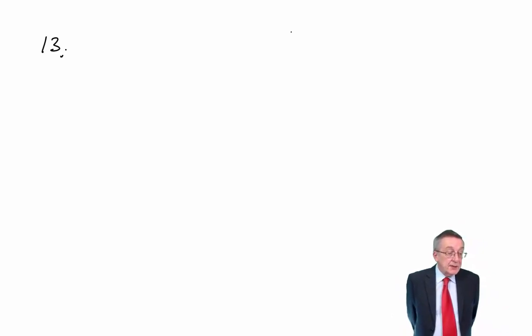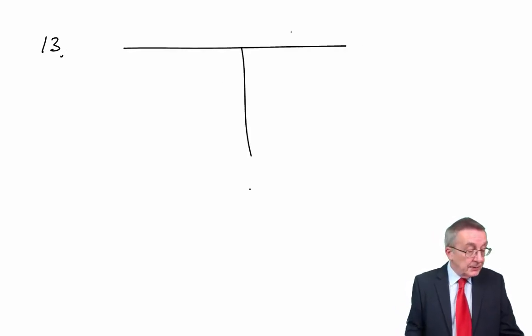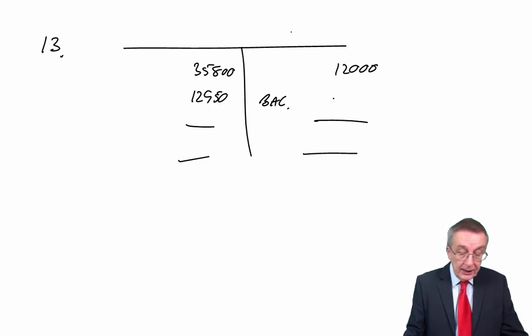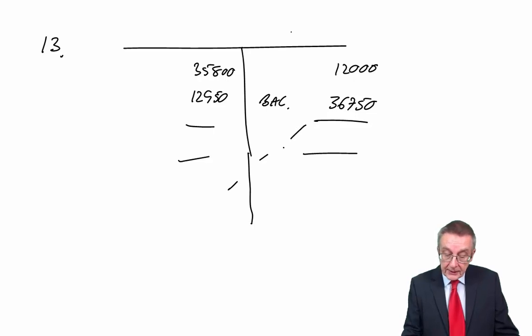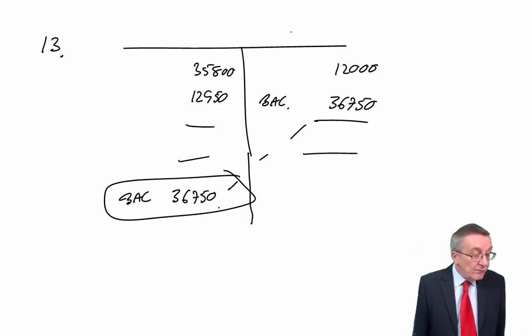Number thirteen. A company's motor vehicles cost account at 30th June X6 is given. What opening balance should be included in the following period's trial balance for motor vehicles? You had balance brought forward, additions, disposals — we end up calculating a balance at the end of the year of £36,750. One of the most fundamental things is that having calculated the balance, we always carry it forward to the opposite side. There is the balance at the start of next year, 1st July X6: a debit of £36,750. Answer A.